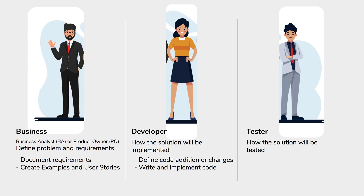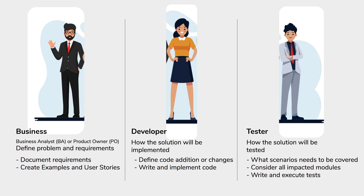Then we come to the tester. The tester decides on how the solution will be tested, and the testing team decides on the scenarios — what needs to be covered, what testing needs to be done, what are the impacted modules, and what all modules have to be covered. Finally, the QA or testing team writes and executes the tests. These are the three amigos.